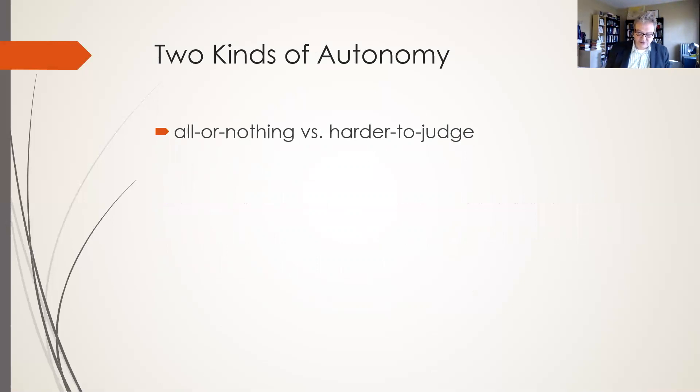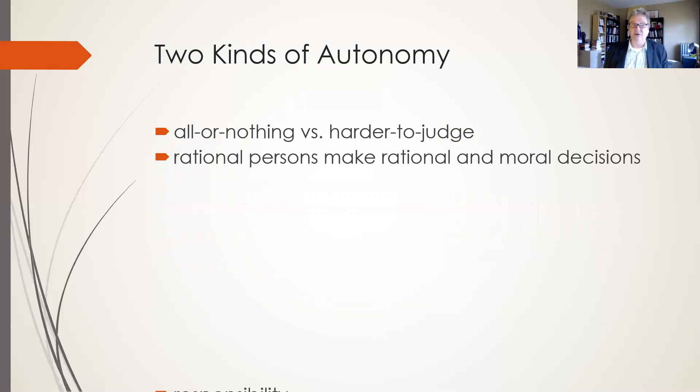Kupperman makes a distinction between two kinds of autonomy: all or nothing autonomy and harder to judge autonomy. All or nothing autonomy refers to the way rational persons make rational and moral decisions. This type is linked with responsibility, so we tend to hold people responsible for their actions if and only if we can regard them as autonomous, as in charge of their lives.